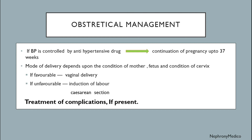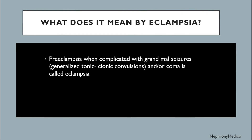Obstetrical management: if BP is controlled by antihypertensive drugs, continuation of pregnancy up to 37 weeks. Mode of delivery depends upon the condition of the mother, fetus, and condition of the cervix — if favorable, vaginal delivery; if unfavorable, induction of labor or caesarean section. Treatment of complications should be done if present. Preeclampsia complicated with grand mal seizures — generalized tonic-clonic convulsions and/or coma — is called eclampsia.